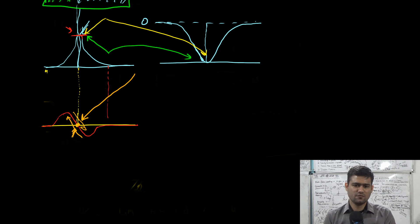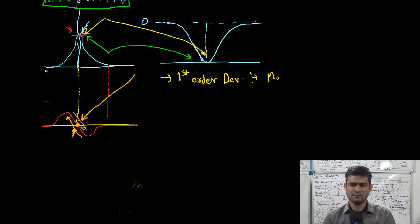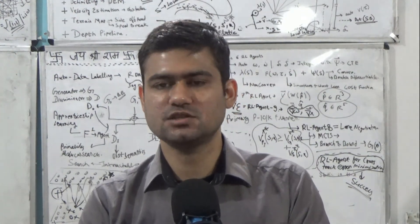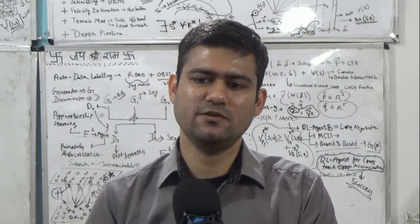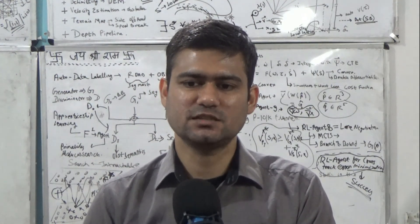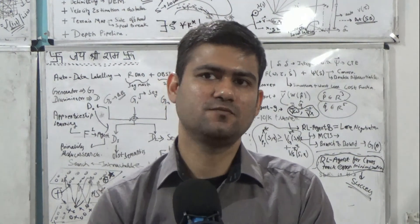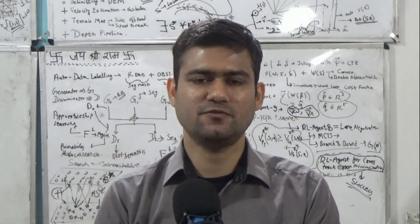To summarize: the first-order derivative based methods identify the maxima or minima in the first-order derivatives or gradients to identify edges in images. Typically, we compute the magnitude of the gradient, which is always positive, so we ignore the minima and just consider the maxima. That's why we select all pixels as candidate edge pixels if the magnitude of the gradient is above some user-defined threshold.